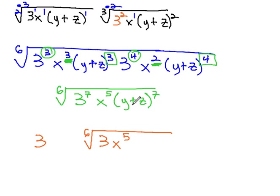For the y plus z, treating it as one group again, we divide 7 by 6 to get 1 remainder 1. This means 1 y plus z comes out, and 1 y plus z remains inside the radical.